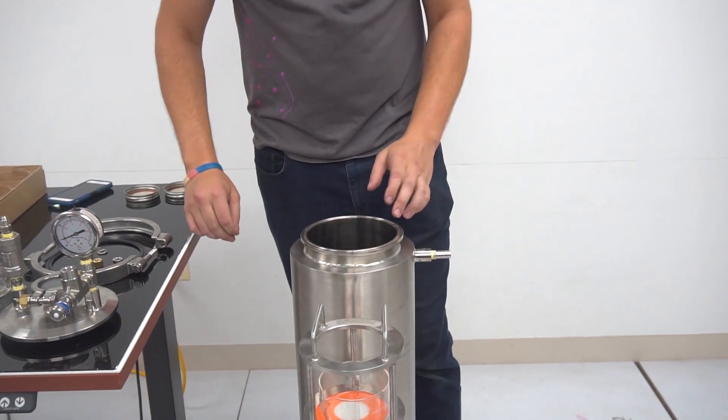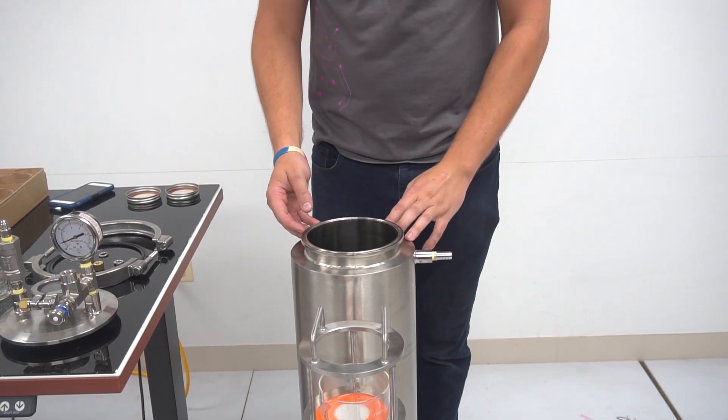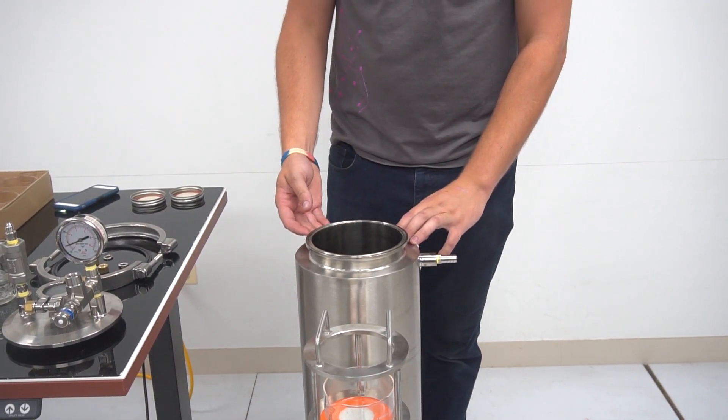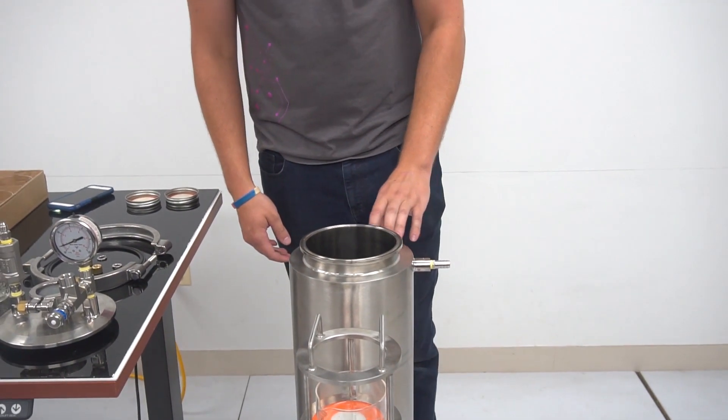So while the diamonds are forming, it's recommended not to move the machine at all. So just set it, leave it, and then come back in a little while, maybe even two weeks or so, and you'll have some formation. Thanks for watching.